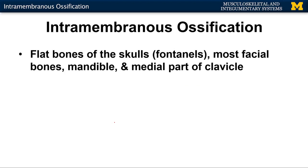We're going to focus in this presentation on intramembranous ossification. This is the least complex, but actually most bones of the body form through endochondral ossification. The examples that form through intramembranous ossification are: the flat bones of the skull — the skull cap; the fontanelles, which you colloquially refer to as soft spots (those soft spots on top of a baby's head that will eventually change into bone); most of your facial bones associated with the anterior portion of the skull; your mandible, which is your lower jaw; and the medial part of the clavicle, colloquially referred to as your collarbone.